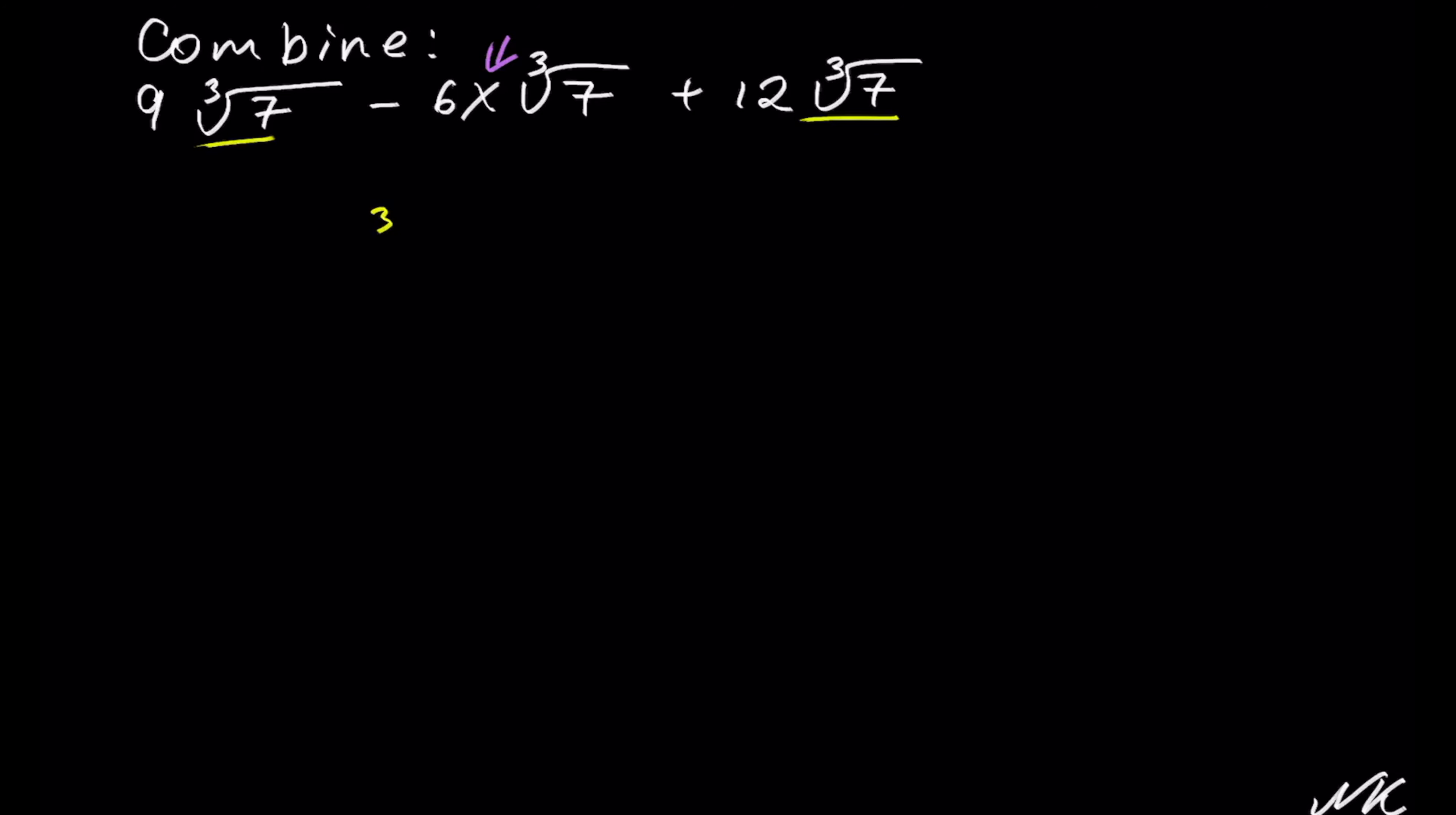So we have cube root of 7, which is our like term. We have 9 of them in the first term and we have plus 12 of them in the last term minus 6x cube root of 7.